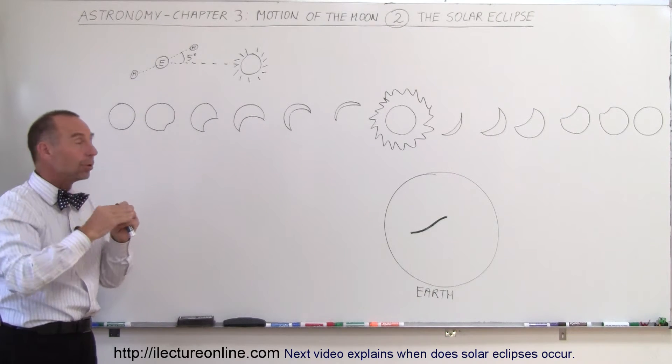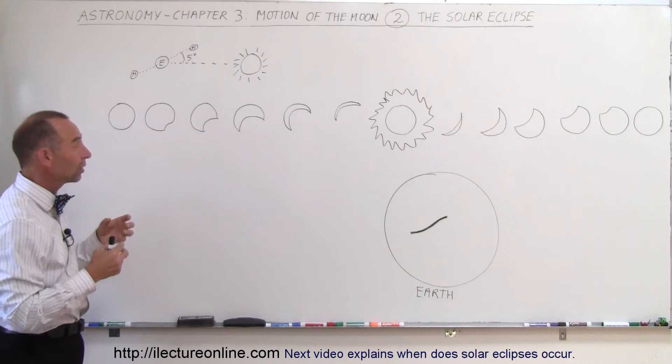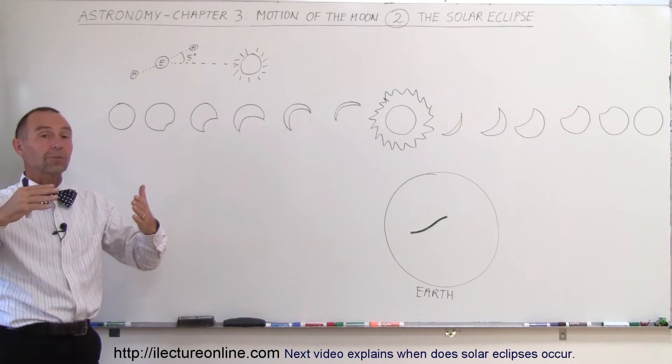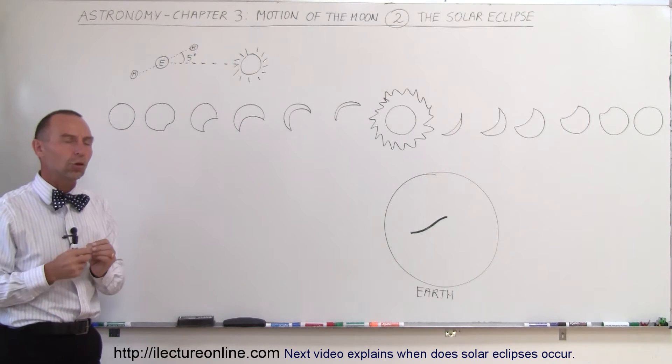It'll then enable the light to be blocked out from the Sun, and we'll experience a solar eclipse. Now sometimes we'll experience what we call a total solar eclipse, where all the light is blocked, and sometimes only a partial solar eclipse.